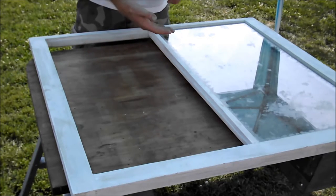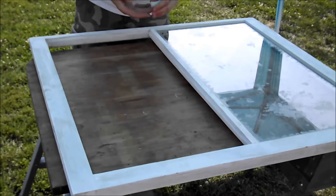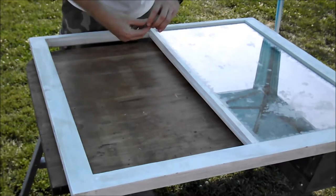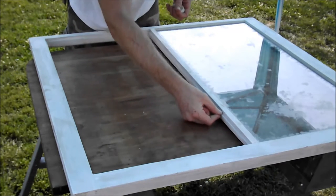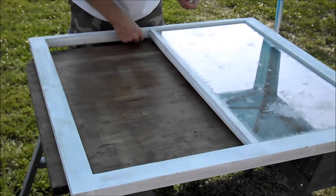You can see this side is already complete. The first step is to get your window glaze and you want to do a thin bead of window glaze all around this bead here.